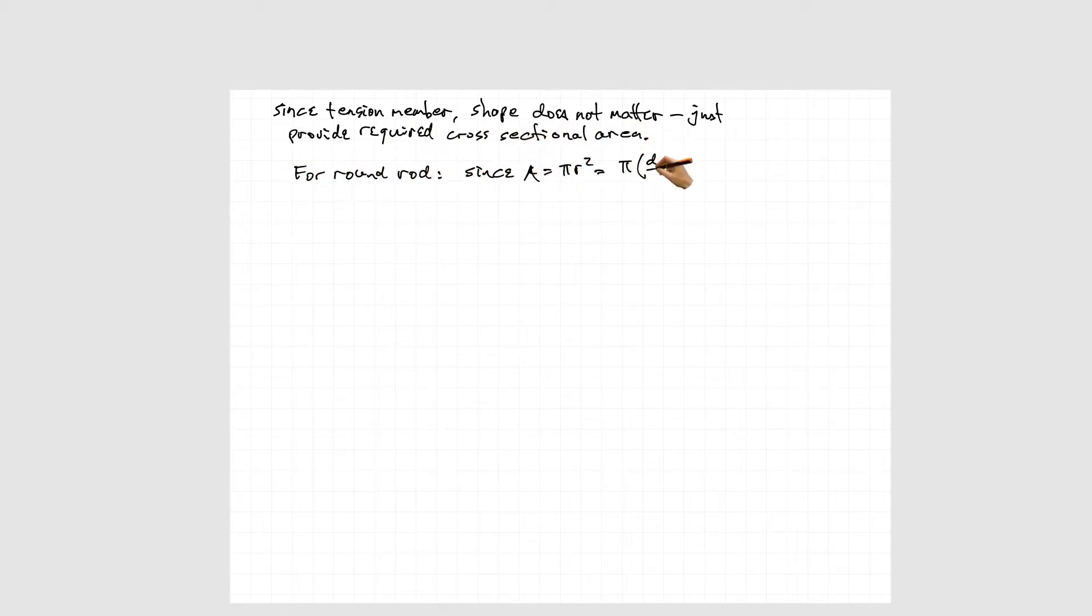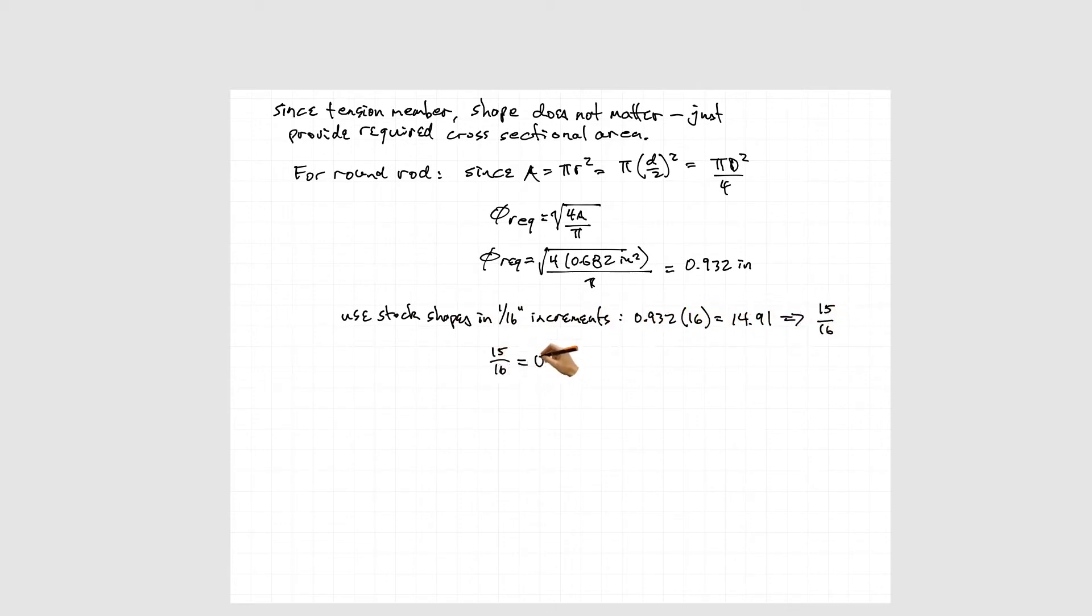For a round rod, since area of a circle is πr² or πd²/4, we're going to say the required diameter is the square root of 4 times the required area divided by π, and that gives us in this case 0.932 inches.